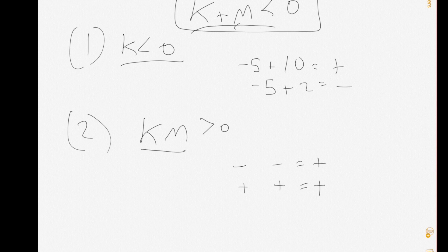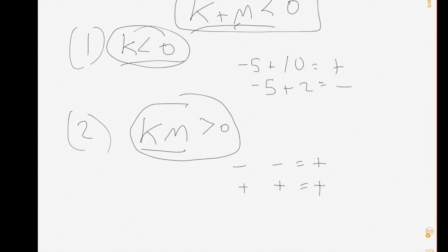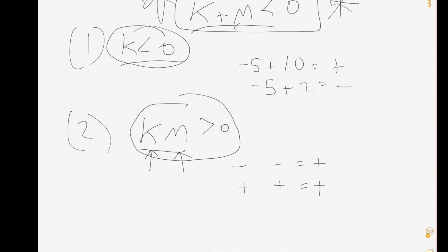Now let's try both one and two together. If we know k is less than zero, then k is a negative number. And if we know that k times m is a positive number, and k is already negative, then m has to be a negative number — because a negative times a negative is greater than zero. So if k is negative and m is negative, then k plus m has to be a negative number. That means individually, one and two are not sufficient, but together they are sufficient, making C the correct answer.